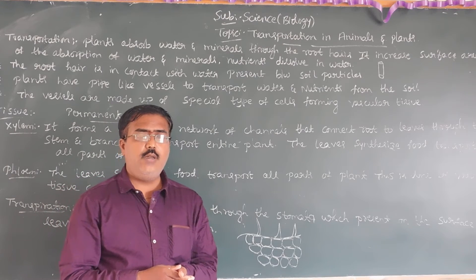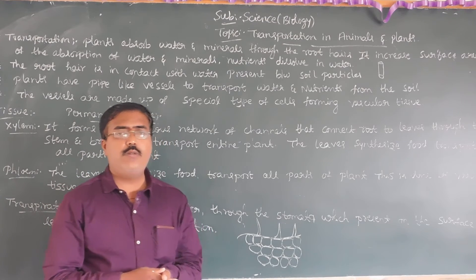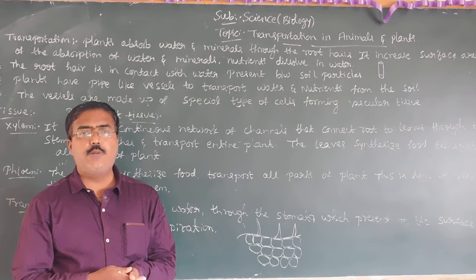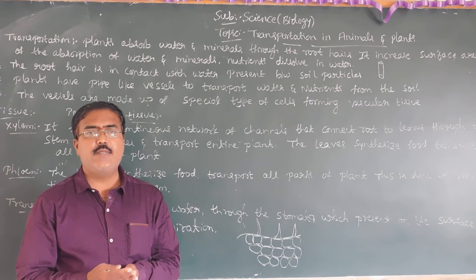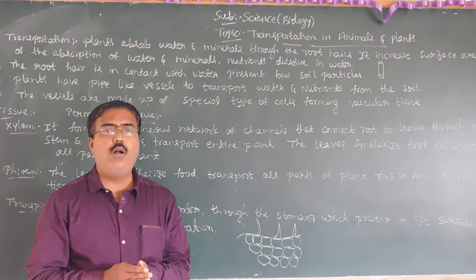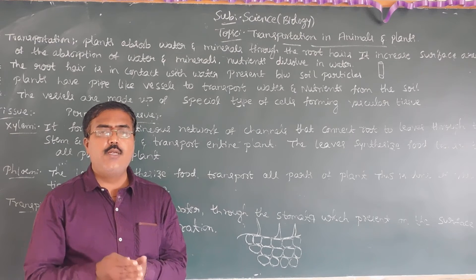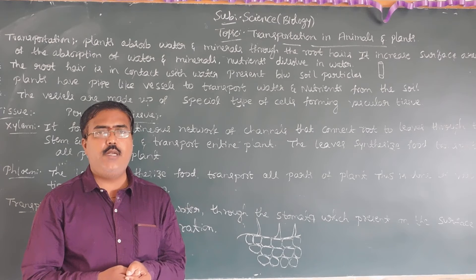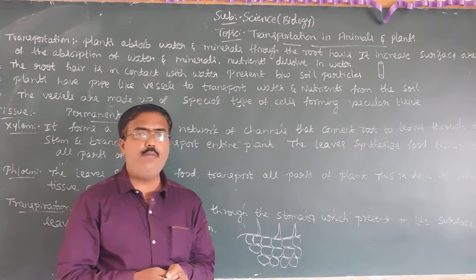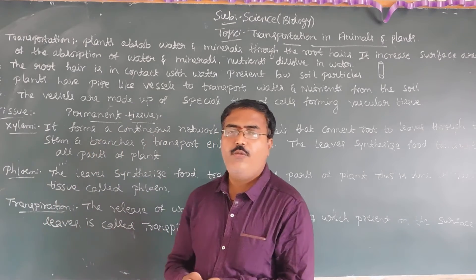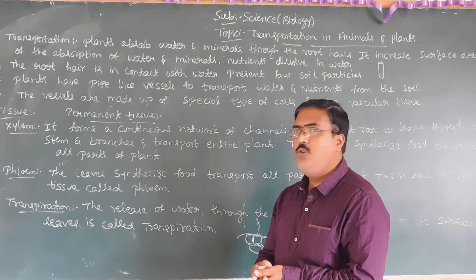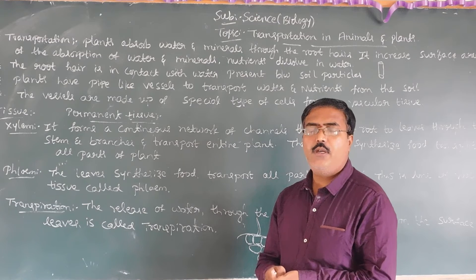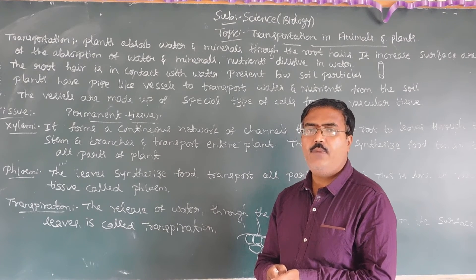Phloem is helpful for the transportation of substances to all parts of the plant. For example, food produced in leaves is transferred to seeds, fruits, and flowers. This is how fruits are formed in plants. This food should be transferred to all parts of the plant body through the phloem. Phloem also consists of companion cells and phloem fibers. These two permanent tissues — xylem and phloem — are responsible for transportation in plants.